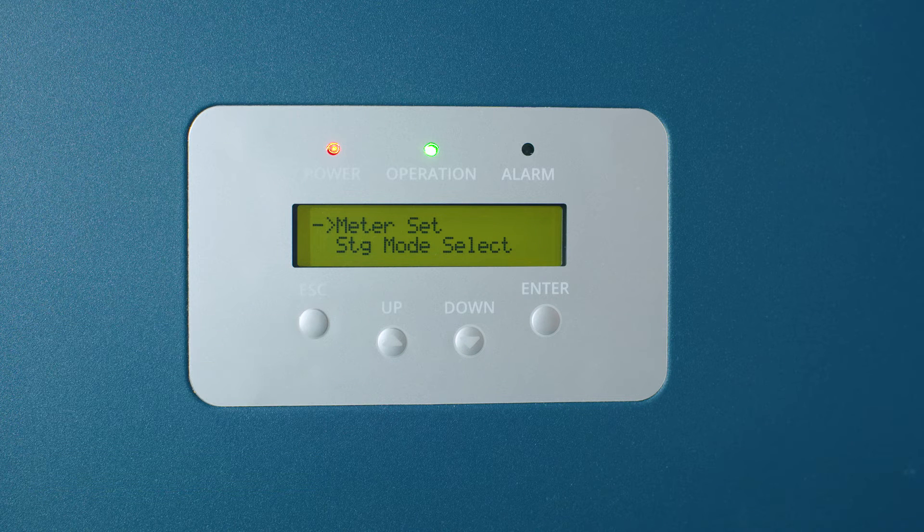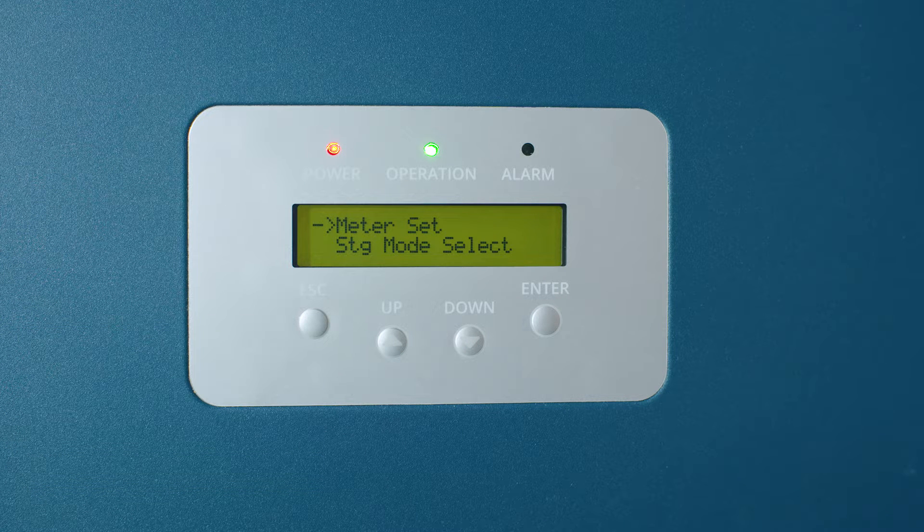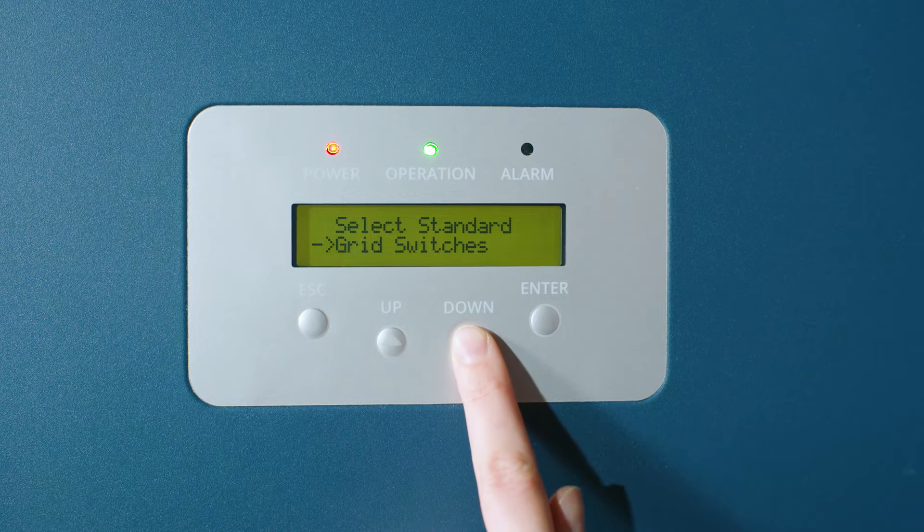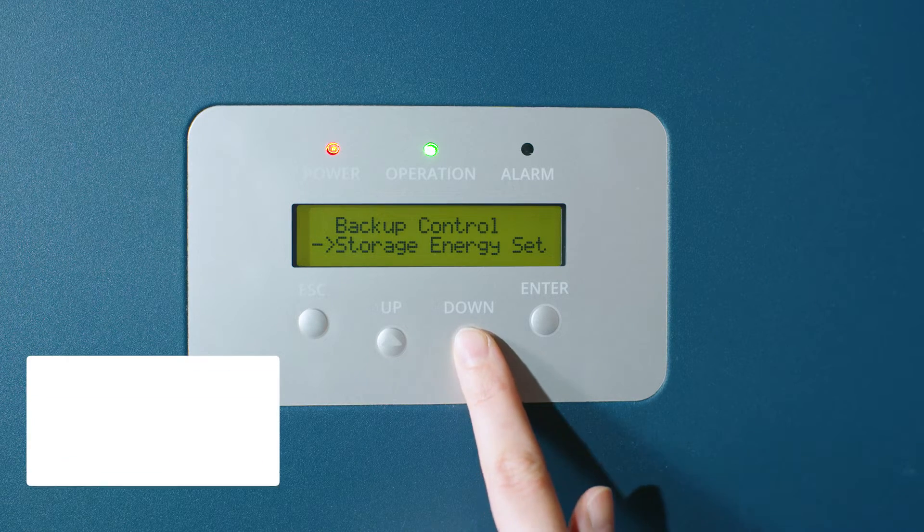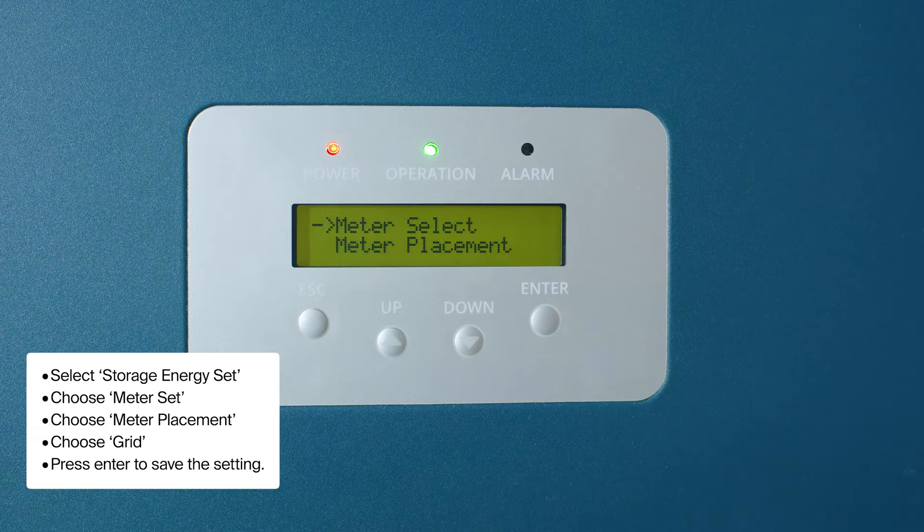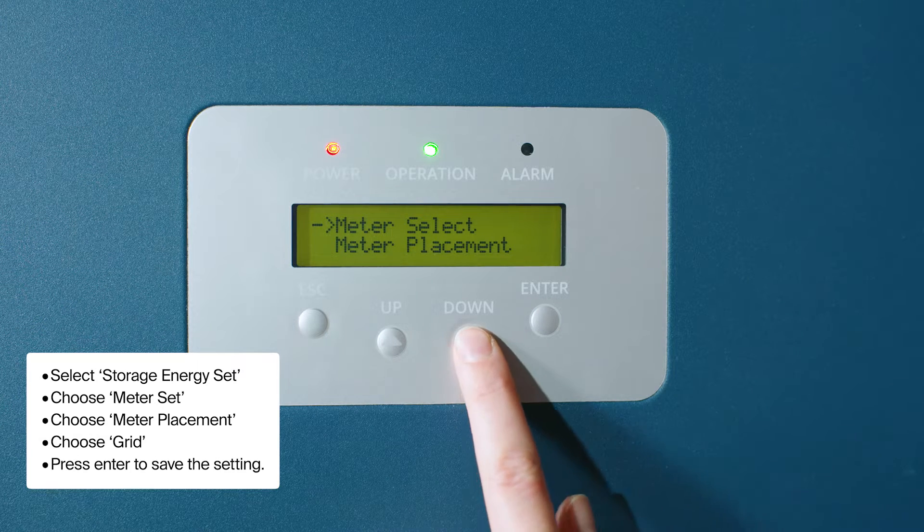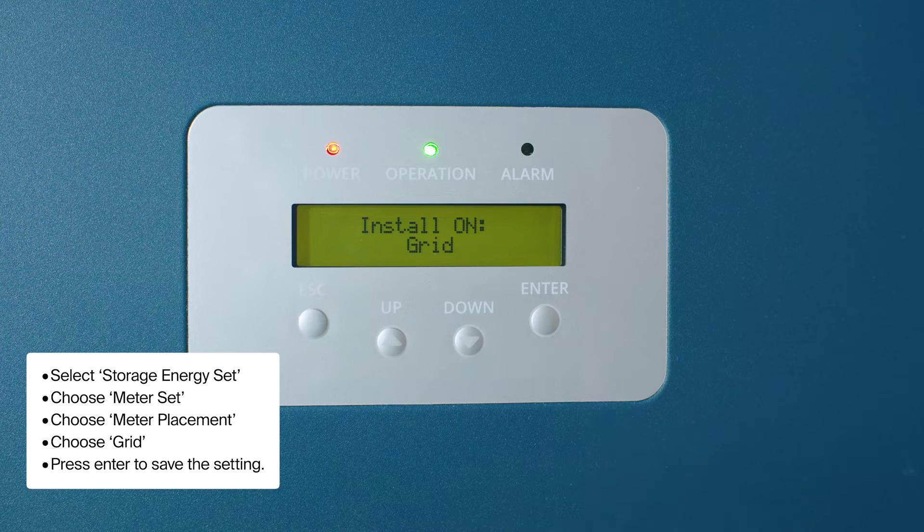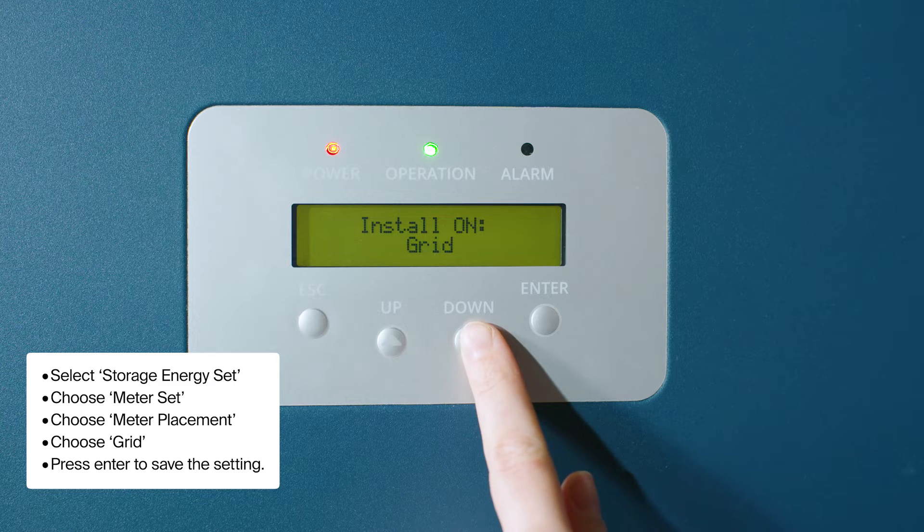After these steps, you can set the meter placement. Choose Meter Set, choose Meter Placement, choose Grid, and press Enter to save the setting.